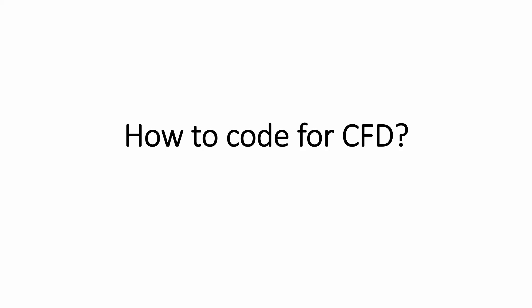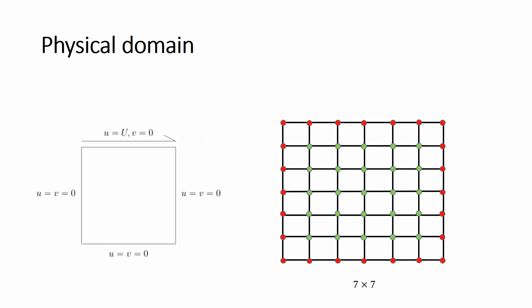We can write our own code starting from scratch, or starting from some other codes, and use them for CFD. The first example we did was for the lid-driven cavity, and that's the same problem we are going to discuss here. The square domain has left, right, and bottom walls that are stationary — so U and V velocity are zero there — while the top wall moves in the X direction with velocity U, and V is zero there.